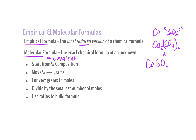A molecular formula could be something like C2H4. Could I reduce that further? Yes, but I'm not going to. The compound has a formula of C2H4 and it behaves like C2H4, so I'm not going to reduce it. The empirical formula of that compound would be CH2 — the bare-bones ratio of how those atoms go together. We need to understand the difference between them and be able to build both.